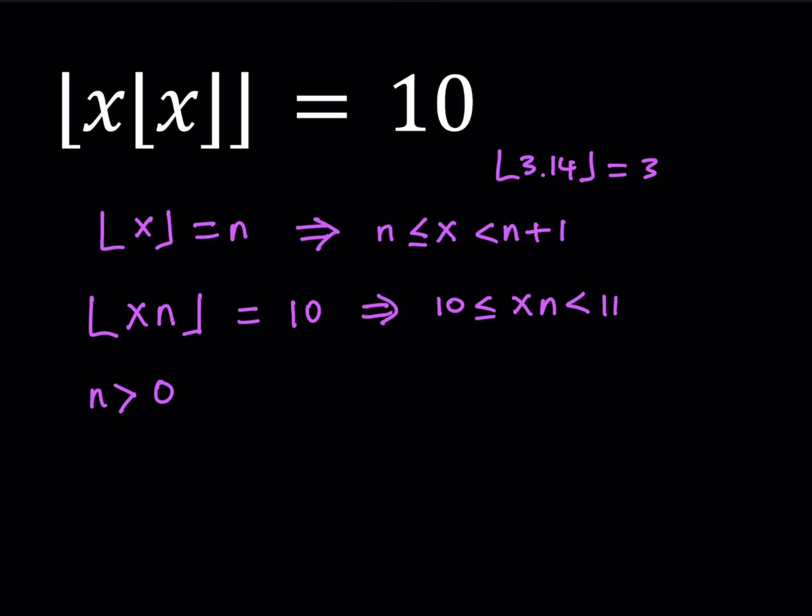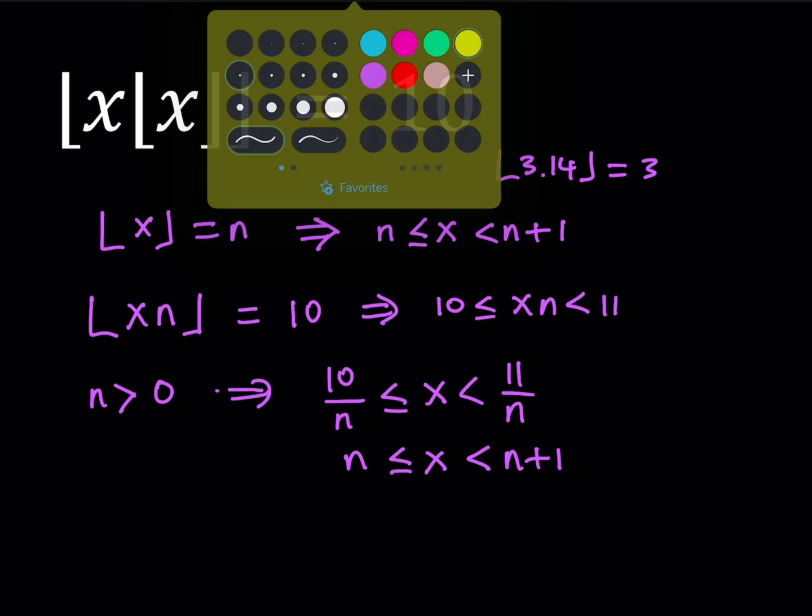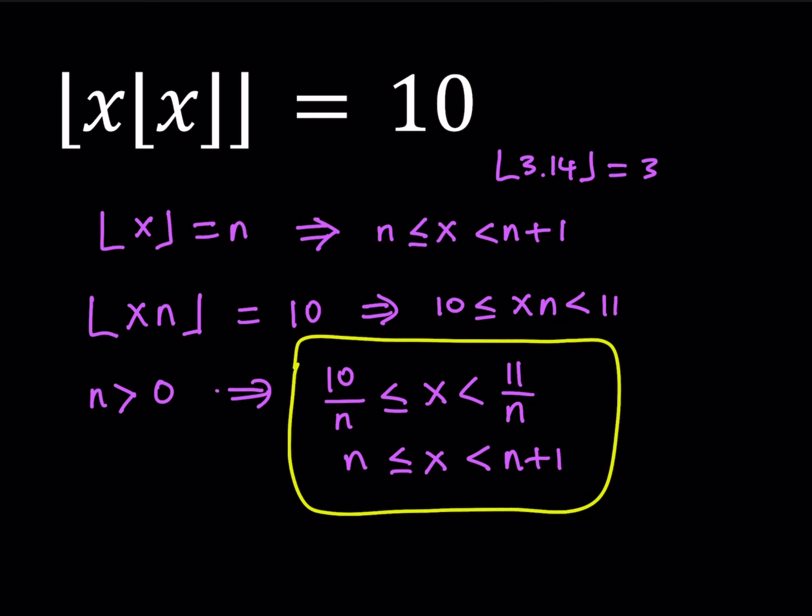Let's suppose that n is a positive number. Why do I have to make an assumption? Because if n is negative, then the inequality will be handled differently. Of course, you can also look at the case where n is negative. So if n is positive, the first inequality doesn't really change. But for the second one, we can divide everything by n, and we get x between 10/n and 11/n.